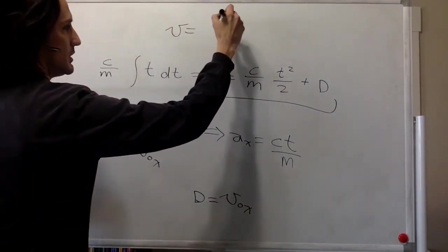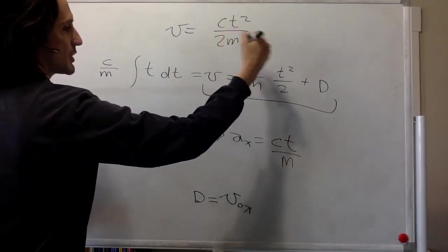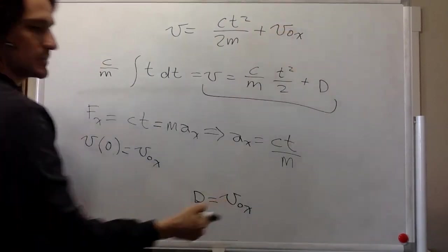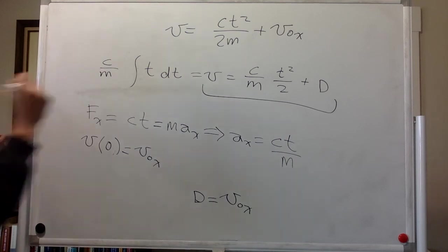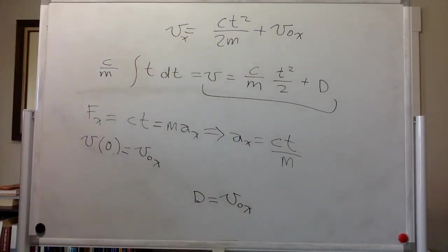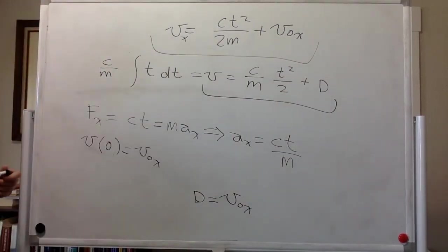So the velocity is ct squared divided by 2m plus v naught x. And that is the velocity in x. That is the answer, or the expression that we were looking for that describes the velocity as a function of time for any time greater than zero.